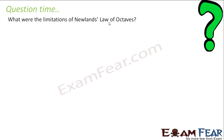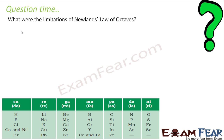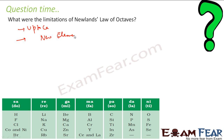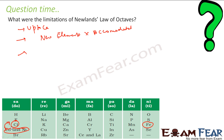What are the limitations of Newlands' Law of Octaves? First, it was only applicable up to calcium — after that the periodicity pattern broke down. Second, newly discovered elements could not be accommodated. Third, cobalt and nickel were placed together in one group, which was wrong. Fourth, iron is far from cobalt and nickel despite similar properties. Fifth, chlorine and cobalt/nickel were in the same group despite having no common properties.